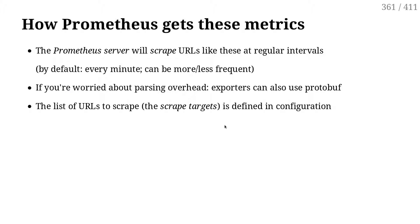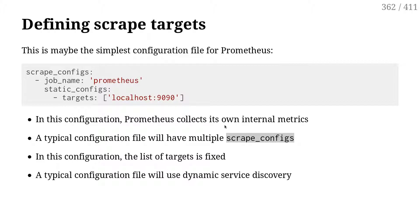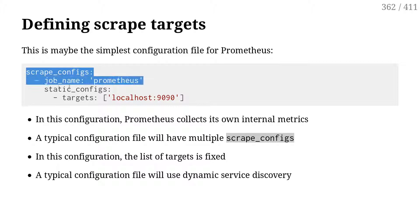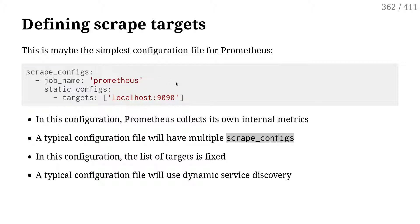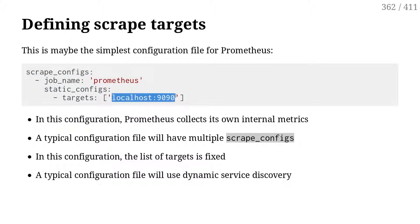It gets that data and ingests it into its data store. This is the simplest Prometheus configuration file you could have — it's four lines, and it tells Prometheus to scrape its own metrics, to get its own internal information and store it. But instead of localhost, we could put the address of an exporter and that would work just as well.